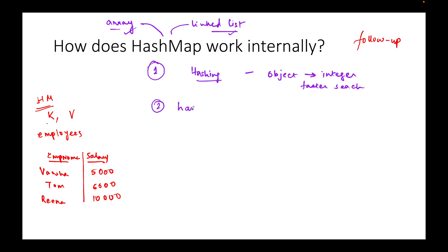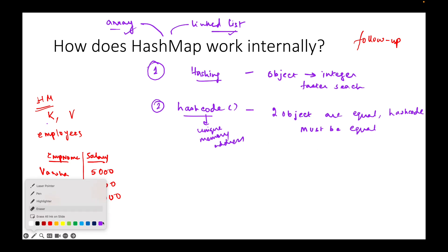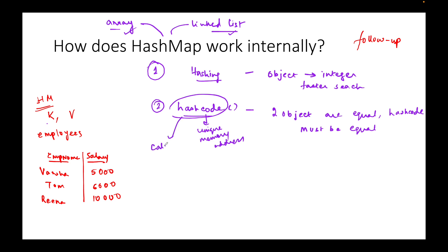The second concept we have to understand is hash code and the contract between equals and hash code. If two objects are equal, the hash code has to be equal. Hash code is nothing but the unique memory address of an object. But if two objects have the same hash code, it is not necessary that both of them will be equal. The question is: why do we need this hash code? We need it to calculate the bucket in which the entries will be stored.